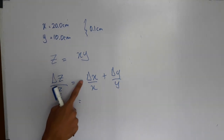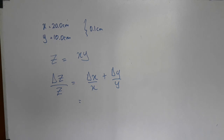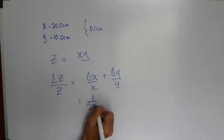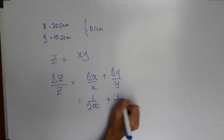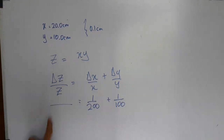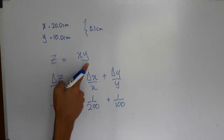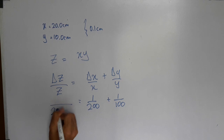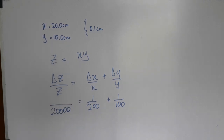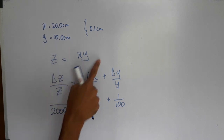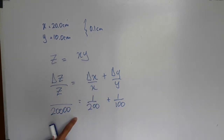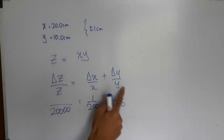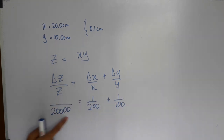Delta x is equal to 0.1 and x is equal to 20. So 0.1 is equal to 20, so 1 is equal to 200. If you are equal to 1, it is equal to 100. If z is equal to y, and if you are equal to 20, then you are equal to 1 mm. So it is equal to 200. Because x into y, it is equal to 200 mm. If you are equal to 1 mm, then delta z is equal to 1 mm.